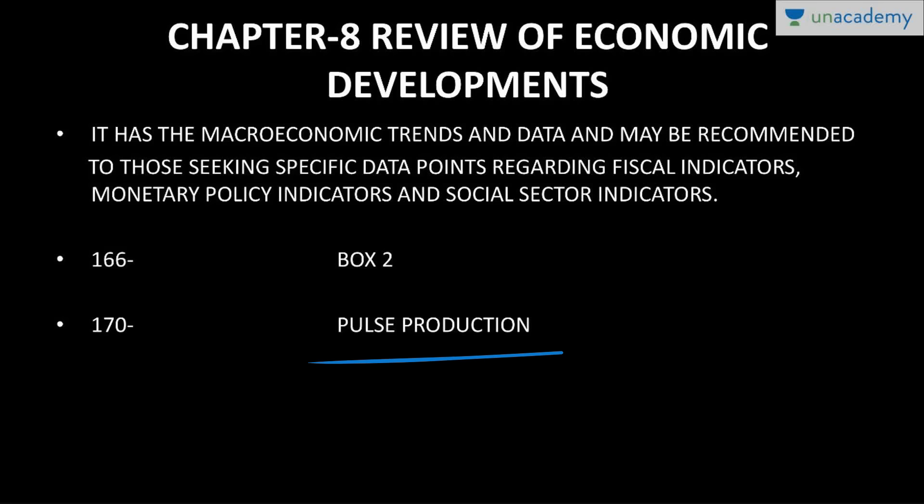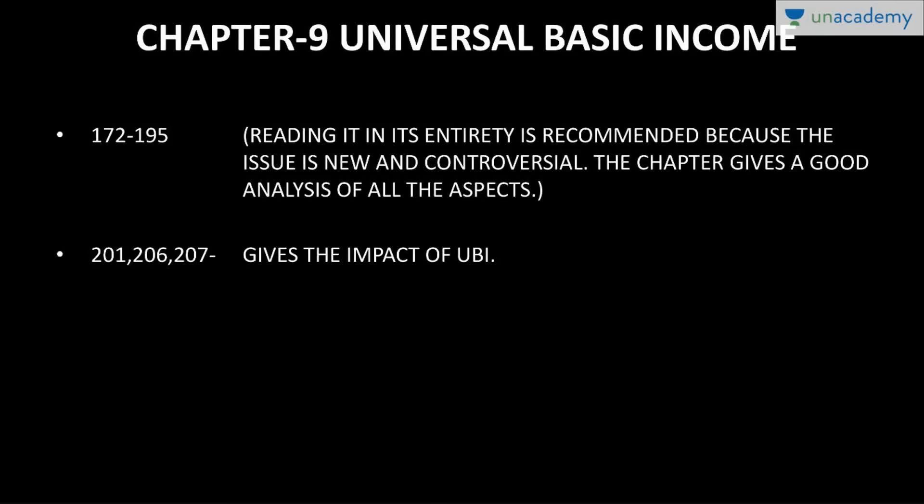The most important chapters are chapter three on demonetization and chapter nine on Universal Basic Income — 'A Conversation Within the Mahatma.' UBI is important because it is a new and controversial debate, and government exam questions will be asked from it for the next five years. Chapter nine runs from page 172 to 195 and covers: introduction, the conceptual and philosophical case for UBI, the case against UBI, why universalization is needed, how UBI can overcome issues, insurance against risk, psychological benefits, improved financial inclusion, whether UBI would promote laziness, moral hazard, and whether UBI would reduce labor supply.